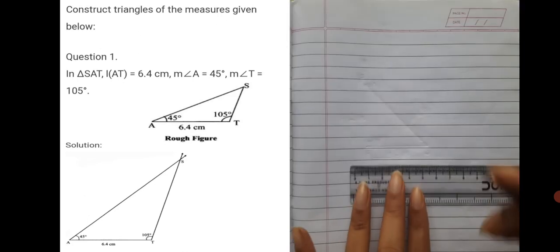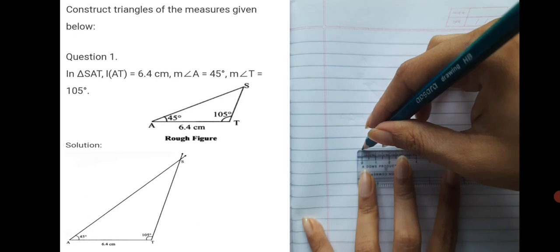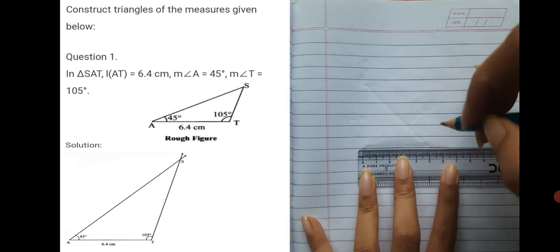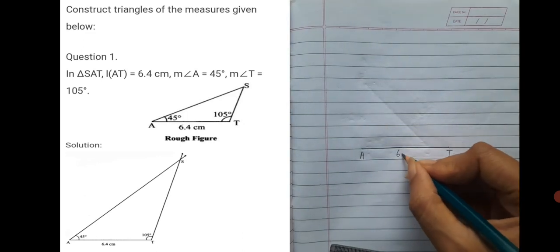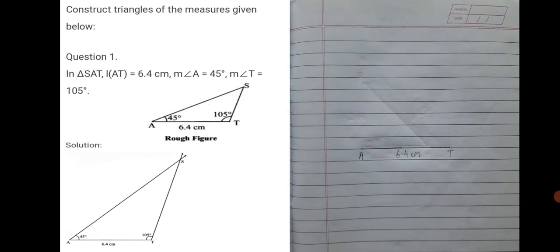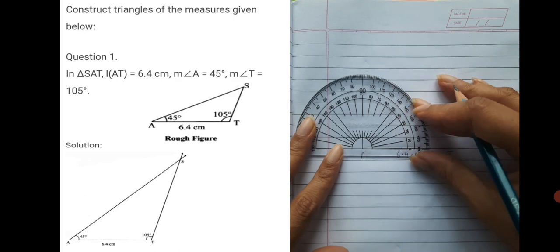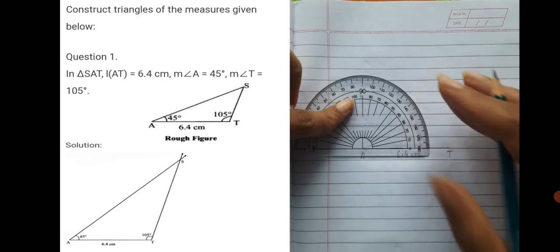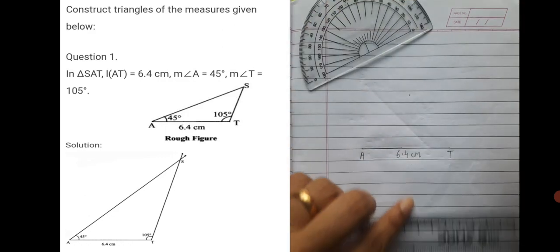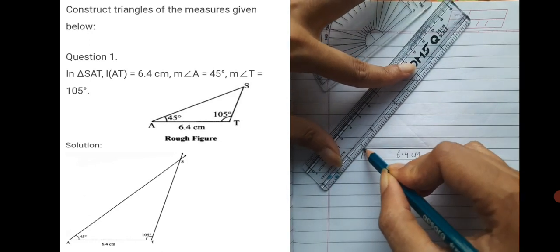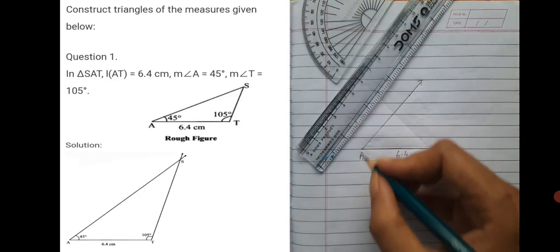Now let's begin the construction. First, draw segment AT of 6.4 centimeter. With the help of a scale, from zero extend to exactly 6.4 and name it seg AT. Now use a protractor to draw the angles. Angle A is 45 degree — an acute angle. Start from 0, 10, 20, 30, 40, and between 40 and 50 is 45 degree. Mark the ray from A. We will name the intersection point after we get it from point T.